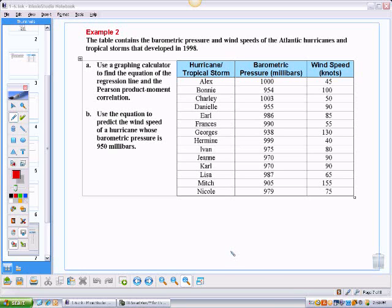The example we're going to look at is what's up on the screen. This table contains the barometric pressure and wind speeds for various hurricanes and tropical storms. We're going to use a graphing calculator to find the equation of the regression line and the correlation coefficient to determine the goodness of the fit of the line. Then we'll use the equation to predict the wind speed of a hurricane whose barometric pressure is 950 millibars.